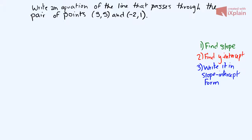In this video, I'm going to show you how to write an equation of a line that passes through two given points. So let's take a look at this example. It says write an equation of the line that passes through the pair of points (3,5) and (-2,1).